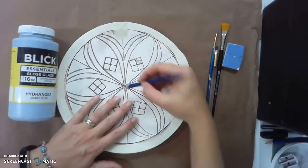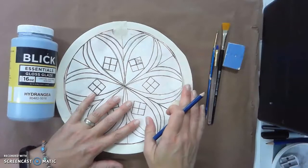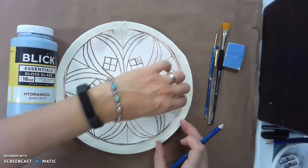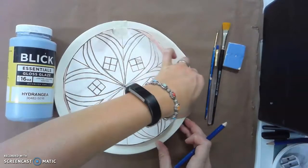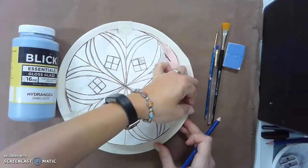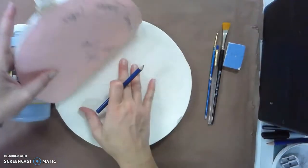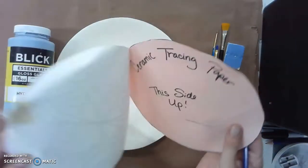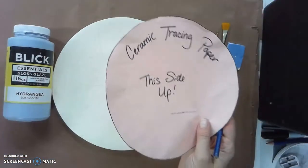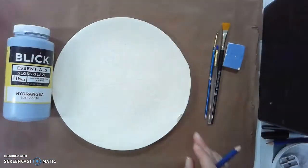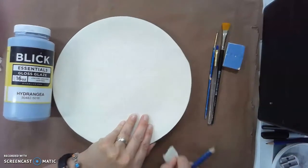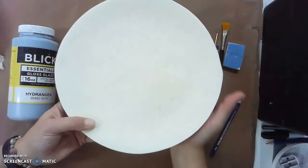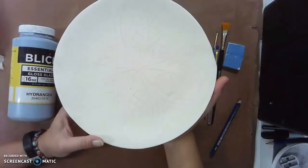Once you have completed tracing over the top of your design with that carbon tracing ceramic paper underneath it, you can go ahead and peel that off of there. This tracing paper for ceramics is reusable, so please make sure to return that. You can very faintly see my design on the plate.